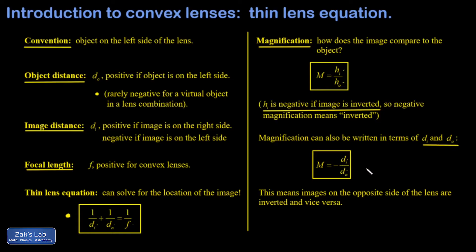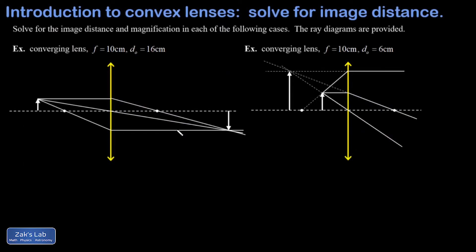Images on the opposite side of the lens from the object have positive image distances and negative magnifications — in other words, they're inverted. We already saw this example: for an object outside the focal length of a converging lens, the image forms on the opposite side, but the magnification is negative because the image is flipped upside down. Now we look at a couple of typical quantitative examples of image formation by a convex lens.